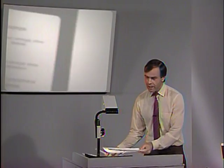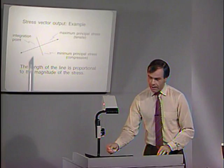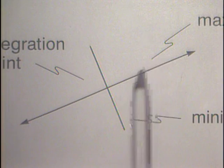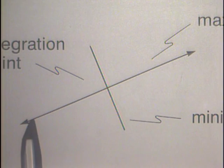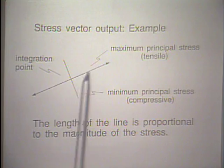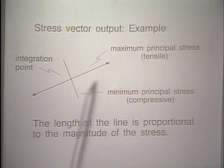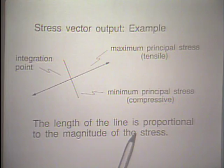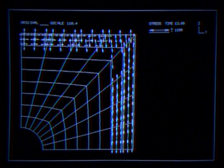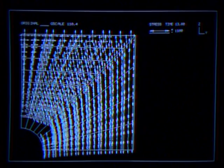We plot at each integration point two lines corresponding to the principal stresses. If they carry an arrow, it is a tensile stress; no arrow means compressive stress. The lengths of these lines are proportional to the magnitudes of the stresses. We perform a stress vector plot for the mesh at time 13 and time 14 - at maximum load application and after removal of the total load.